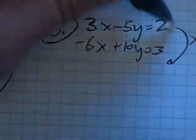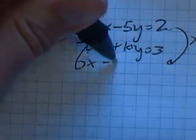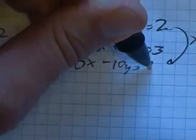So times two, everything up here, 6x minus 10y equals four.